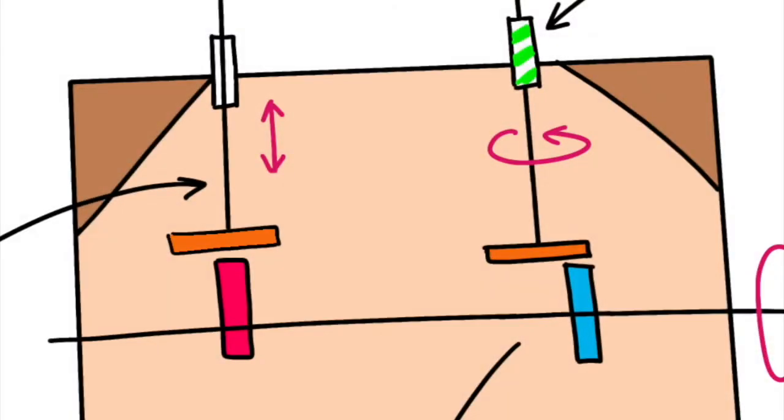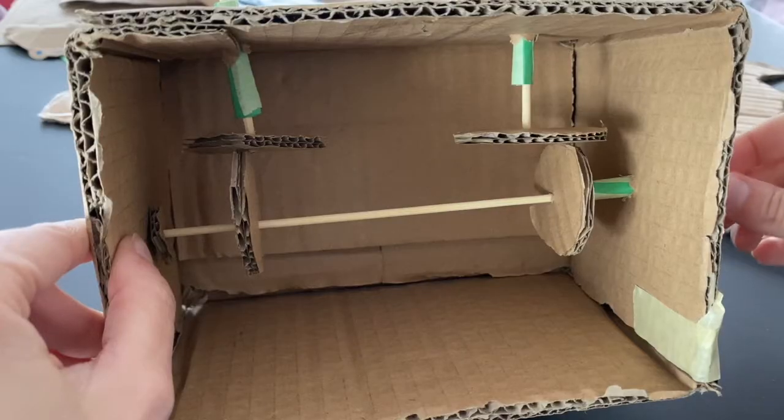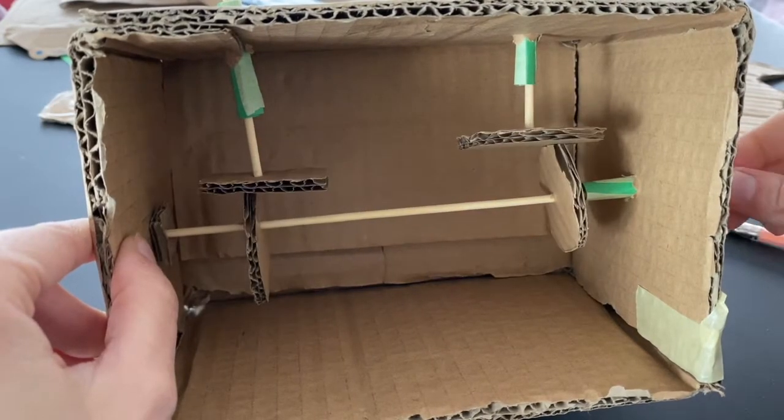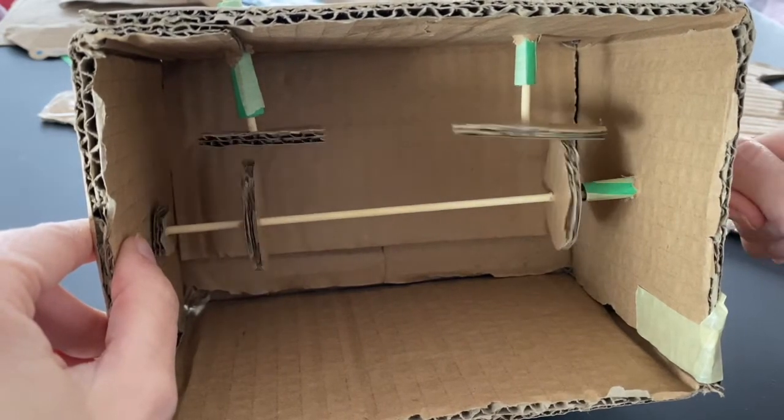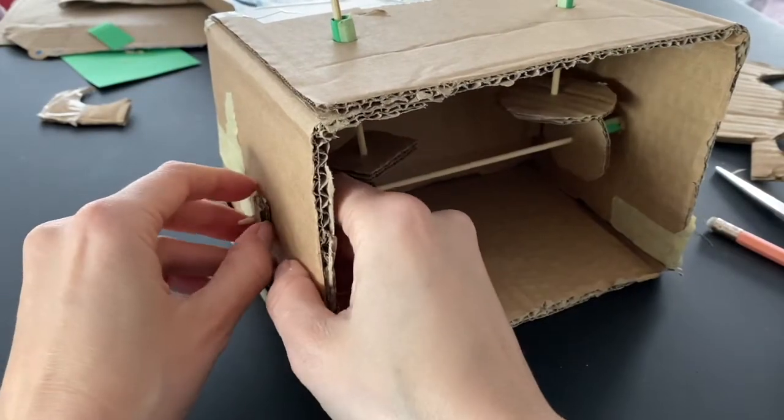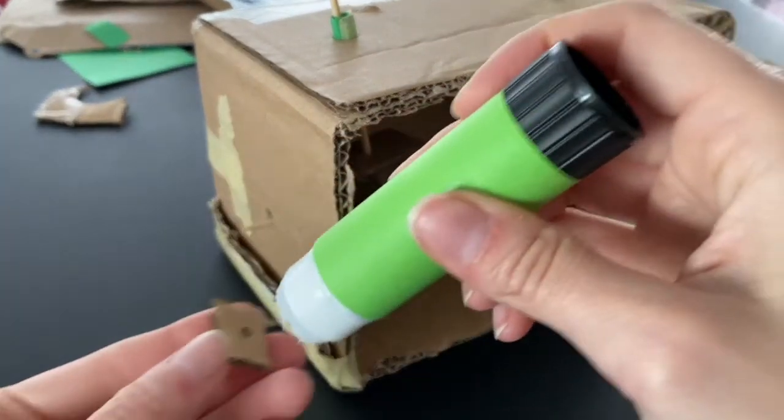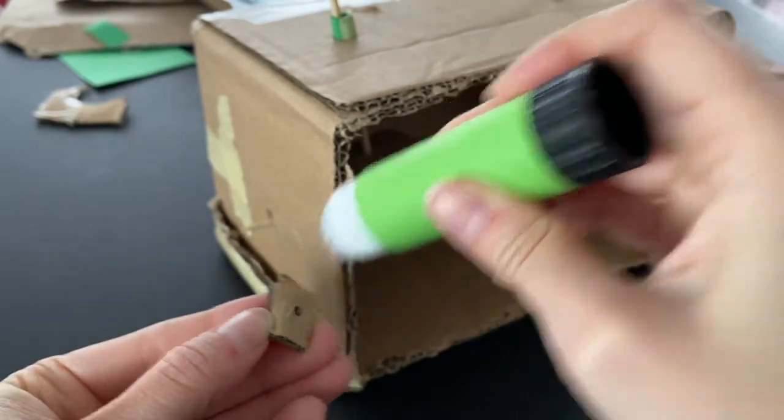As you can see from my sketch here I decided to go for these two movements. But you can choose as many different movements as you'd like and try to build your own mechanism. This is mine: on the left an up and down movement, on the right side a rotation one. I decided to add a bit of extra glue on the support for the horizontal skewer.